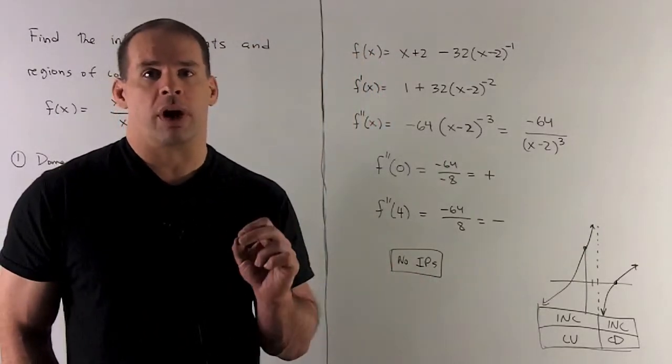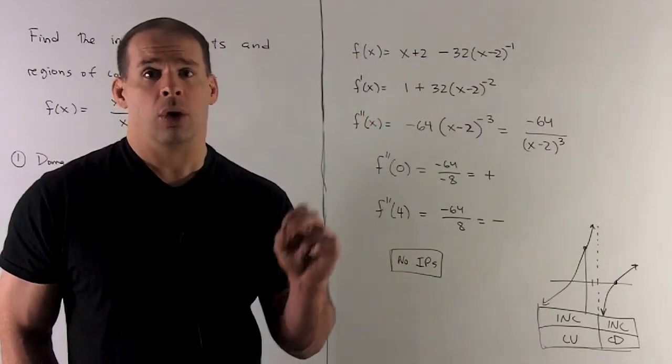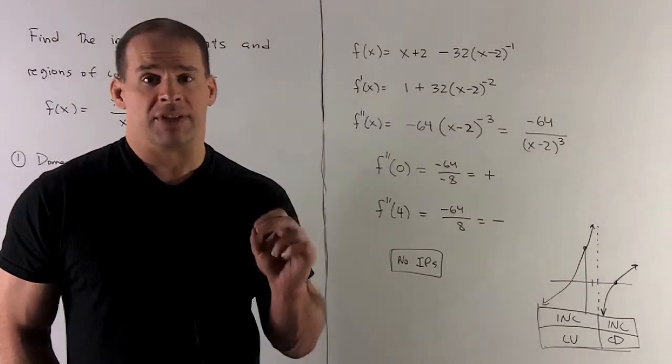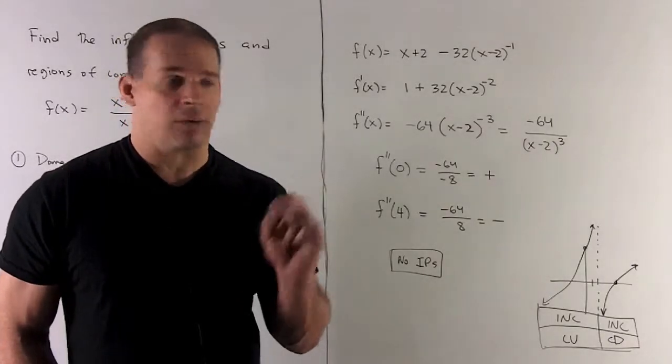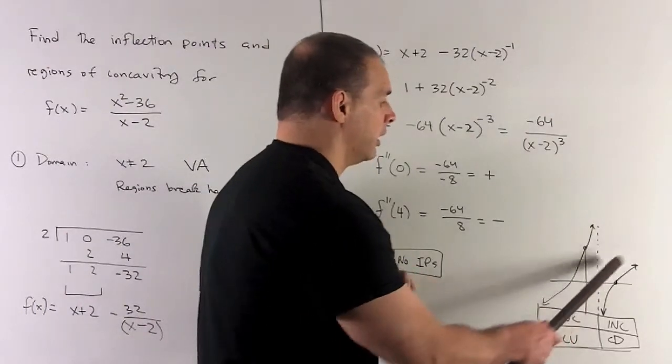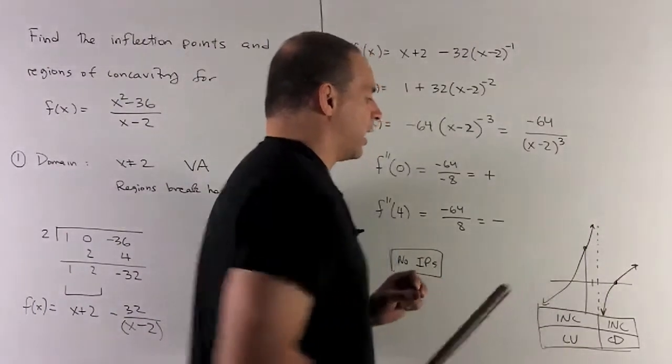On the other region, we put a 4 in. We're going to get -64/8, which gives us -8. So we'll be concave down on that region. So that's over here, and the function bears that out also.